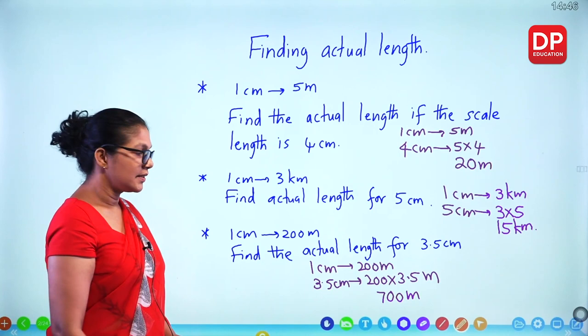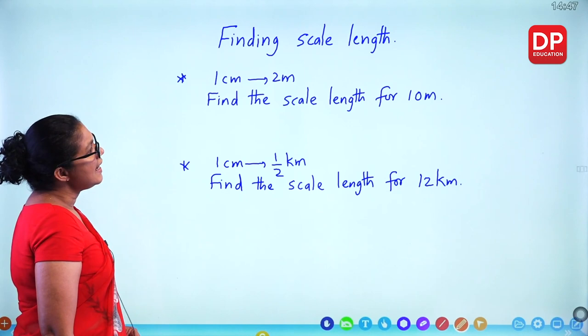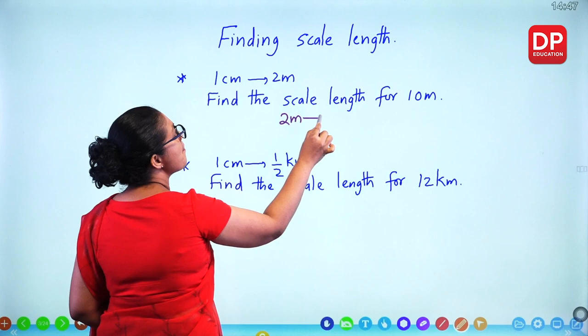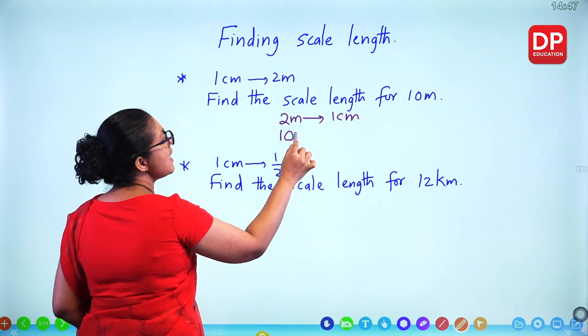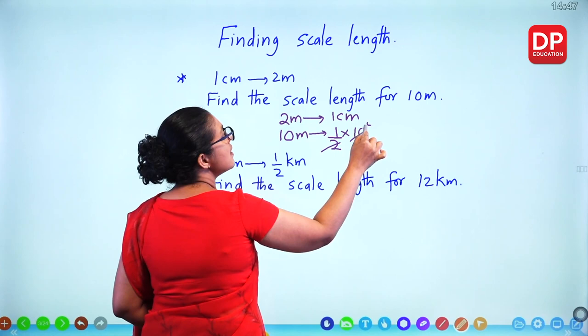Now we'll do it the other way — finding scale length if the actual length is given. Scale is 1 cm represents 2 metres. Find the scale length for 10 metres. Rewrite: 2 metres represents 1 centimetre. For 10 metres: 1 divided by 2, times 10 — that gives 5 centimetres.